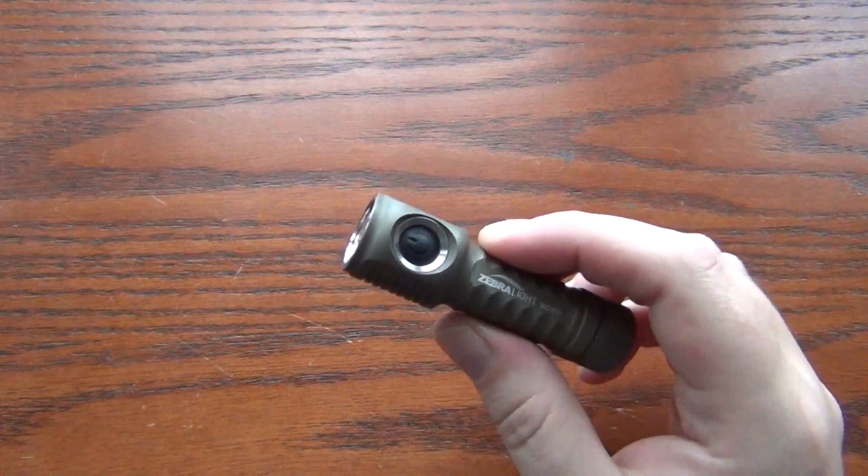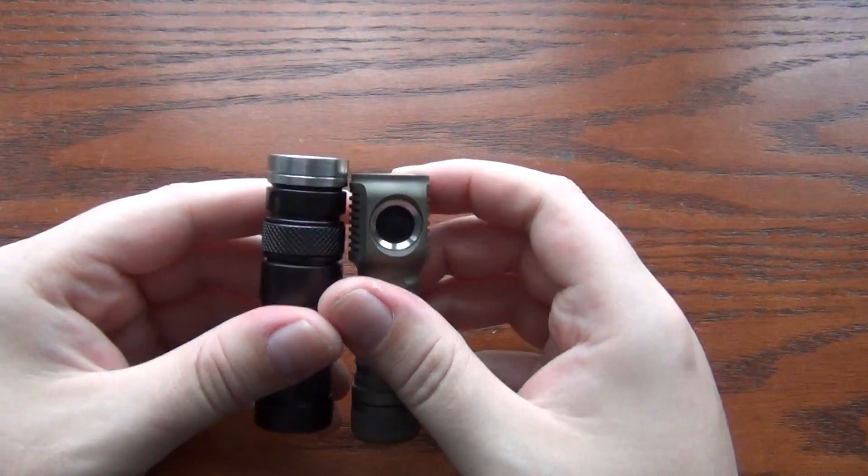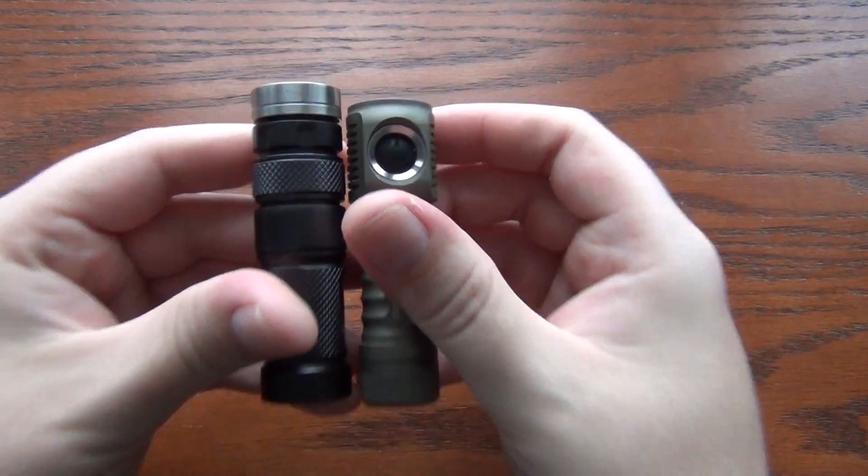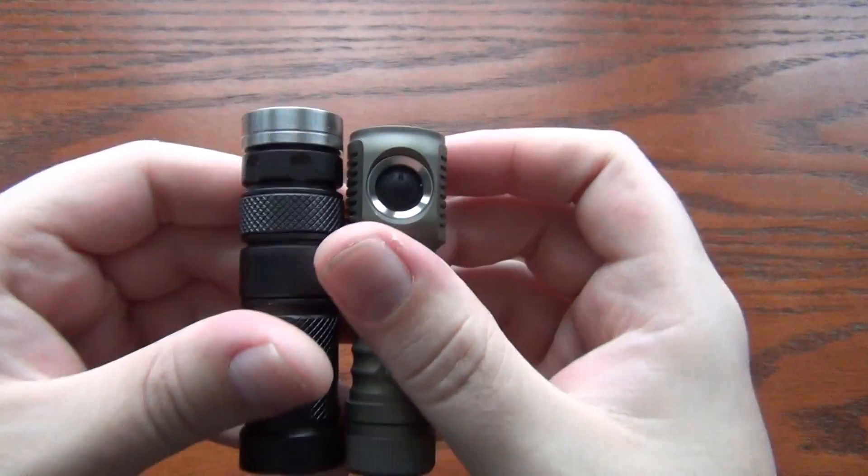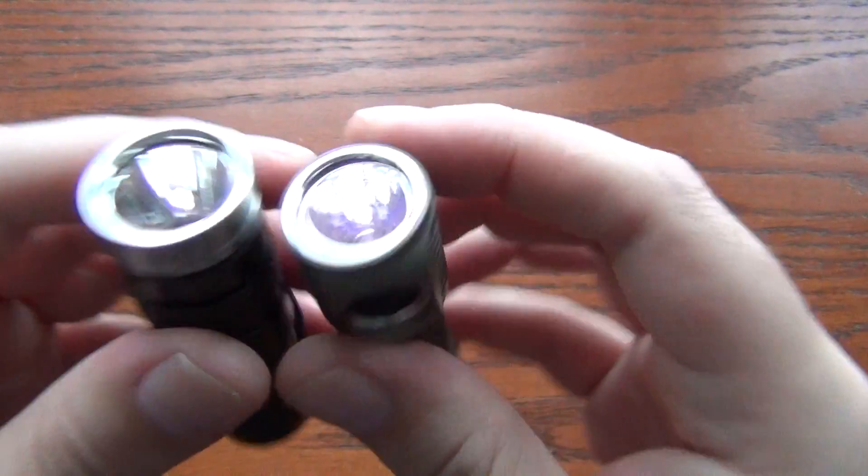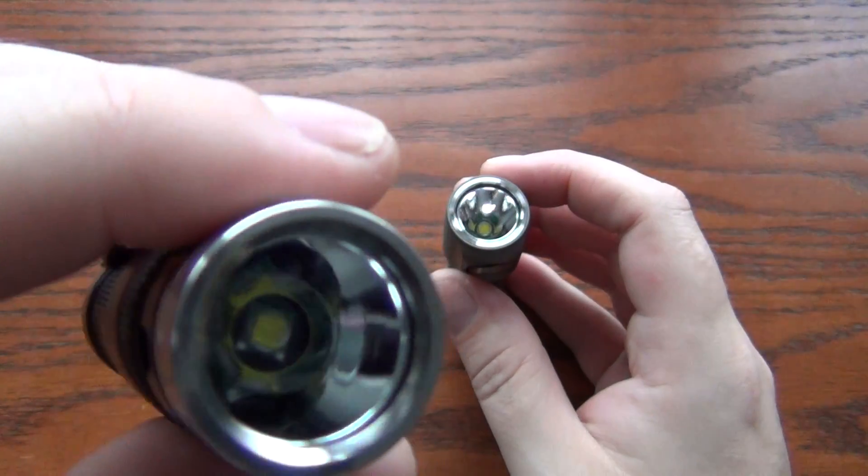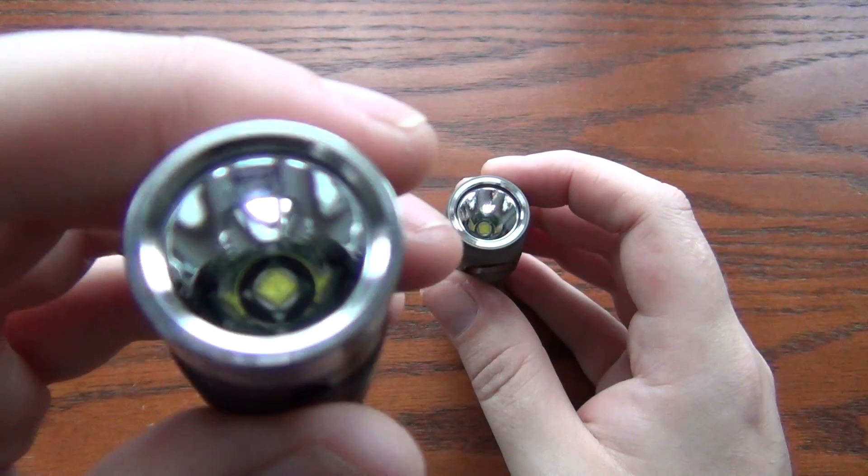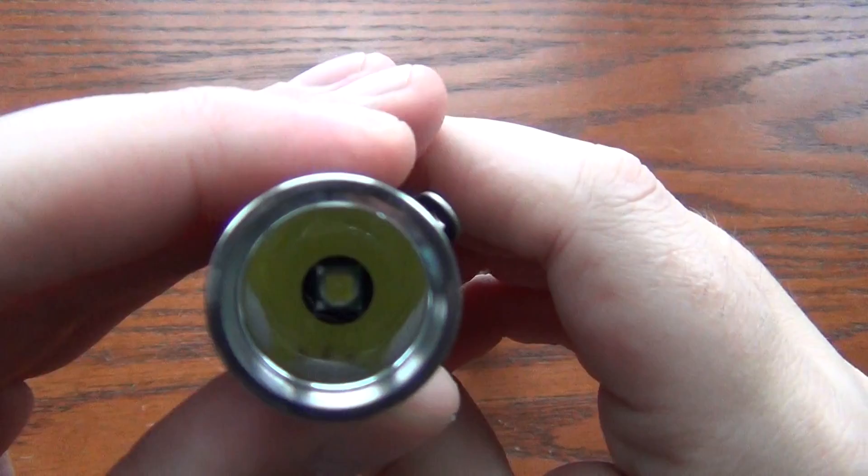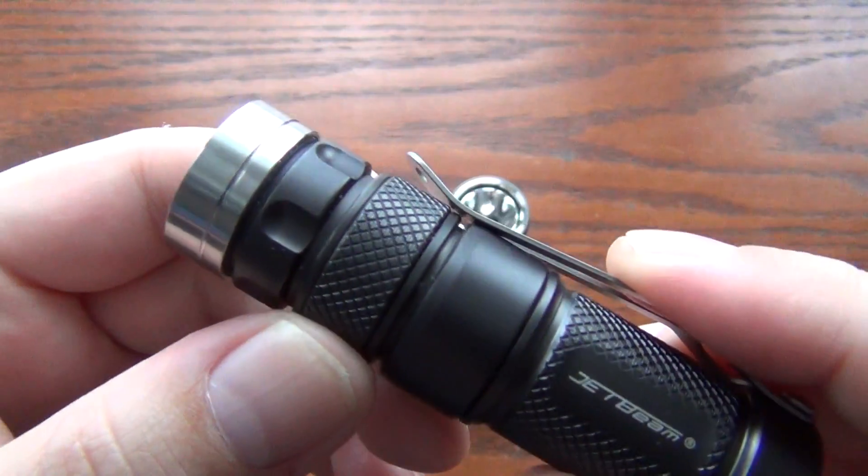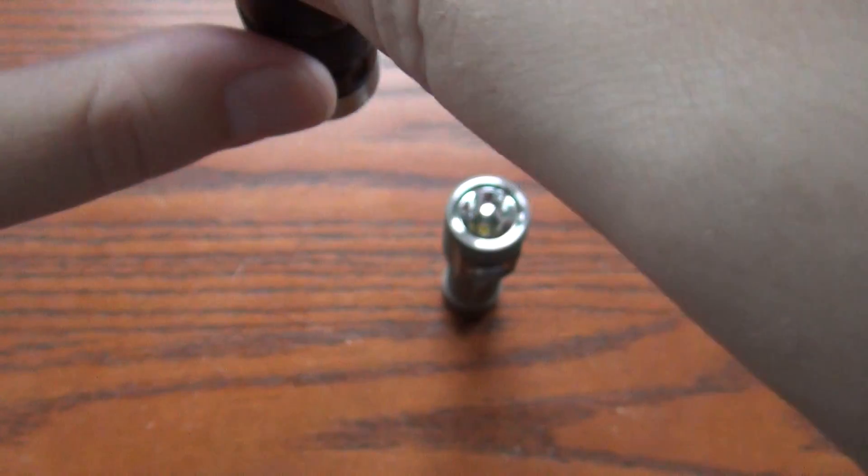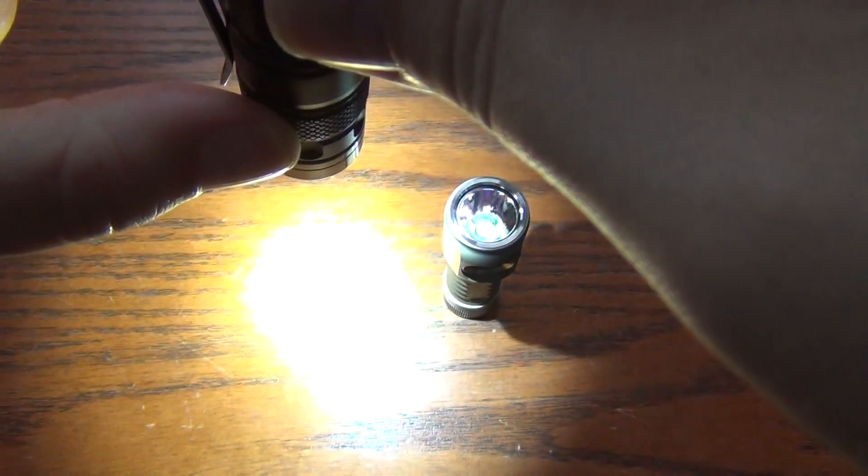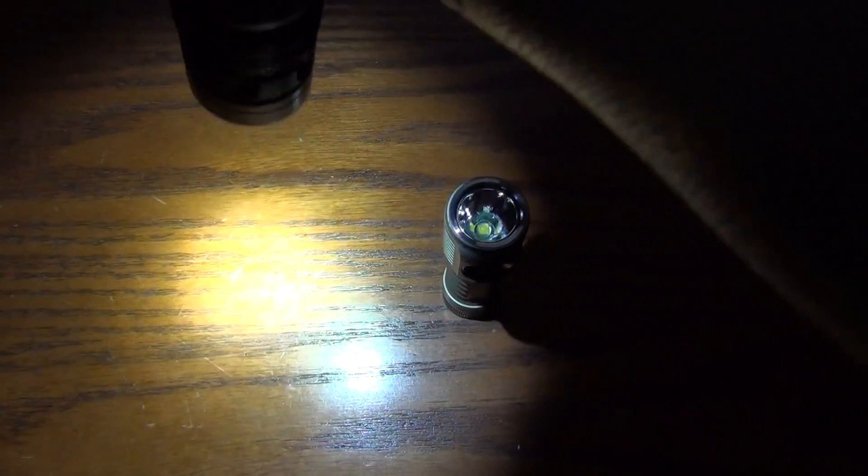Just to compare this to some of its competitors. This is a Jetbeam RRT-01. You can see the SC52 is slightly smaller. Both have XML. This is a smooth reflector, so you'll get a more ringy beam. This one uses a magnetic control ring. And it's infinitely variable. So as you turn it up it gets brighter and brighter. And you can see this puts out, it's rated at 550.